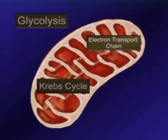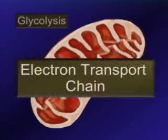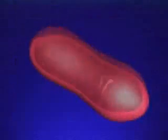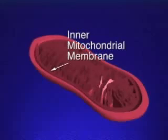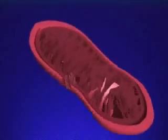The last stage of aerobic respiration is the electron transport chain. The electron carriers are embedded in sequence along the inner mitochondrial membrane. This membrane is folded, providing space for many sets of these carriers.